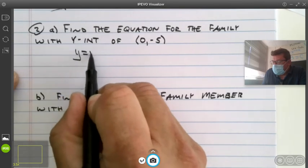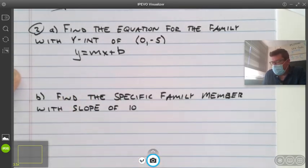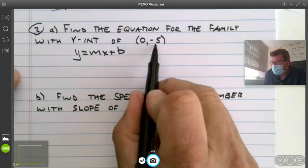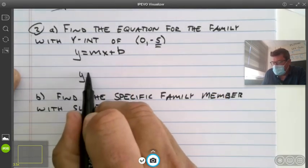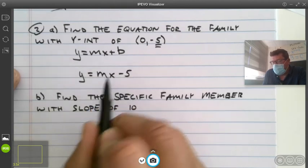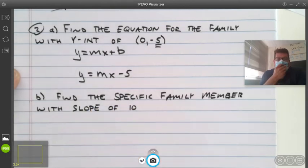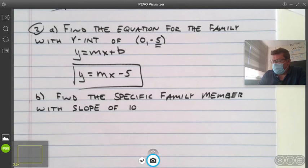So y equals mx plus b. That's a generic slope-intercept form. And then we substitute our specific trait into that generic equation. Y equals mx minus five. So what seems unusual, we stop. That's the answer. That's the family and its equation.